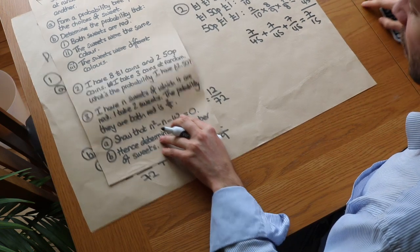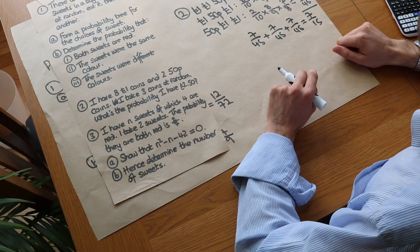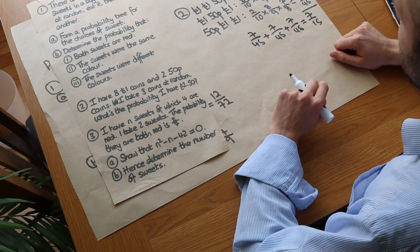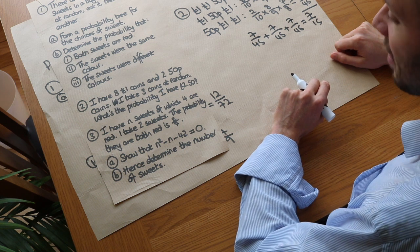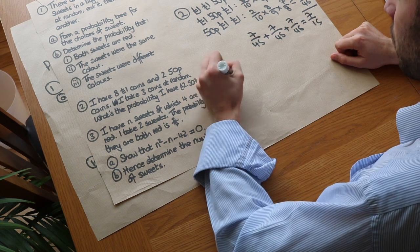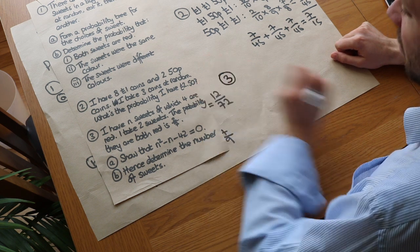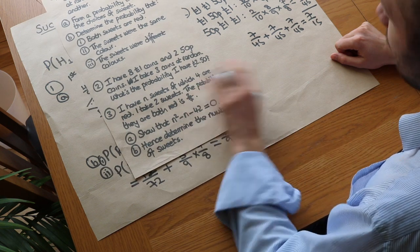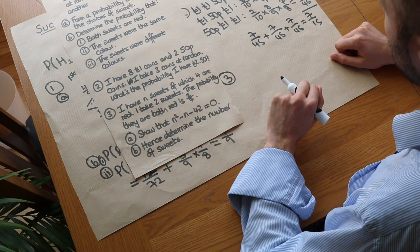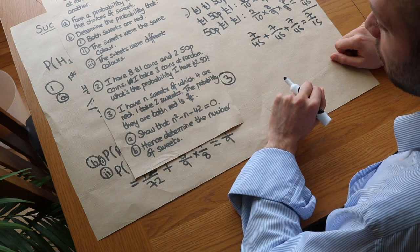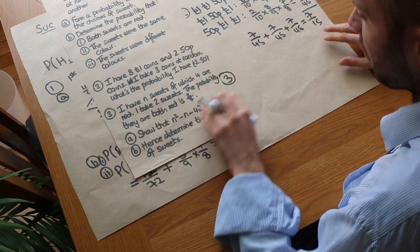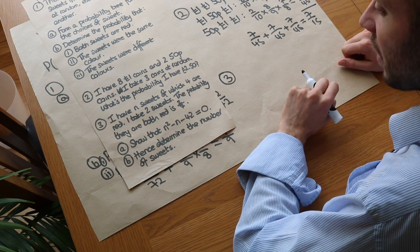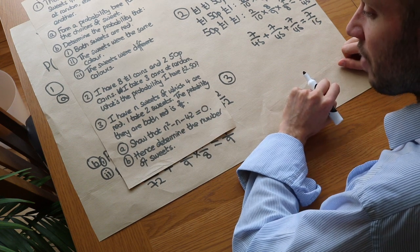The last question is an algebraic one, famously involving Hannah and her sweets, which caused an outcry when it appeared on a GCSE paper. Similar questions have appeared before on GCSE and regularly on the IGCSE.